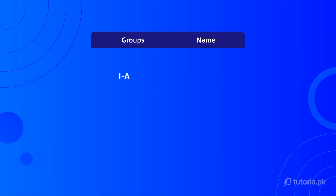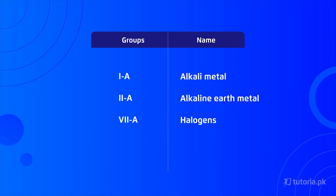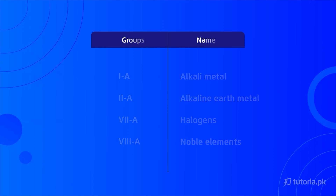There are a total of 18 groups, divided into two parts: Group A and Group B. Group 1A is called alkali metals, Group 2A is called alkaline earth metals, Group 7A is called halogens, and Group 8A elements are called noble gases.